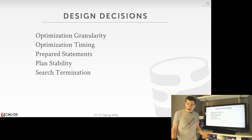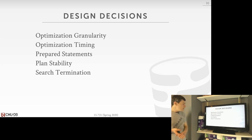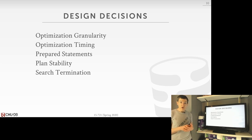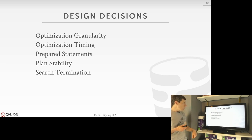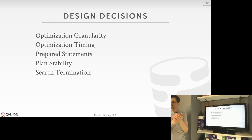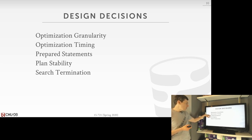Now let's talk about how to actually build an optimizer. The first design decisions we need to consider before choosing a search strategy are: optimization granularity, how to handle prepared statements, plan stability, and when to finish the search. We'll go through each of these topics one by one.